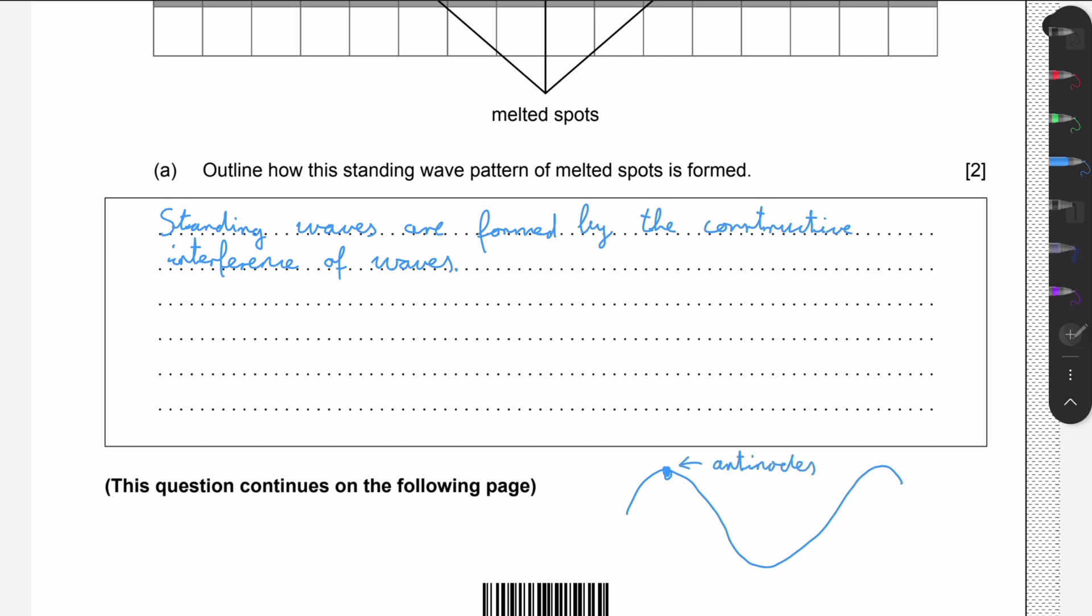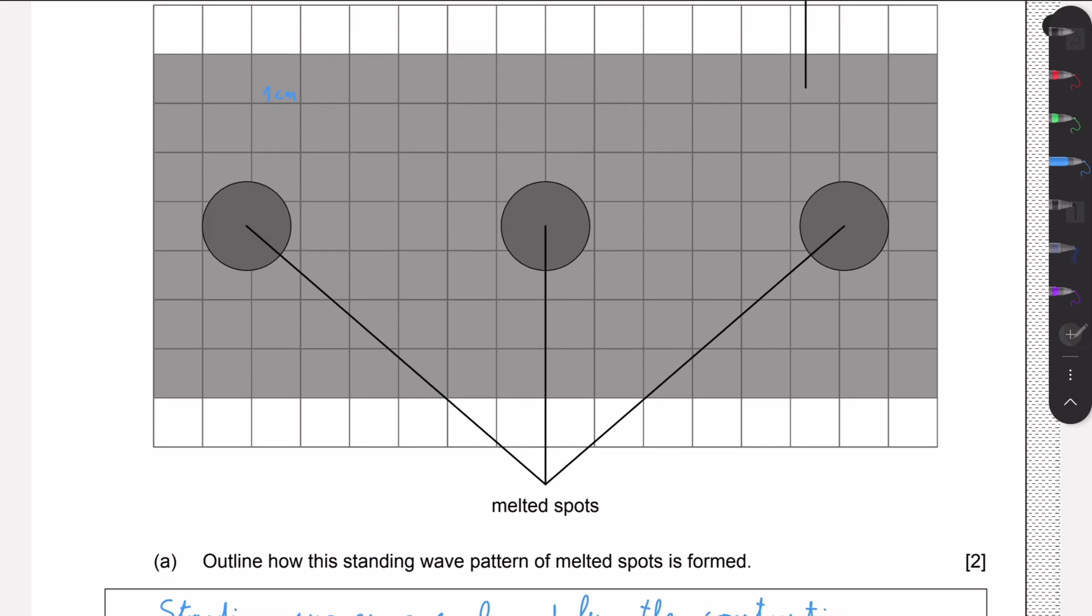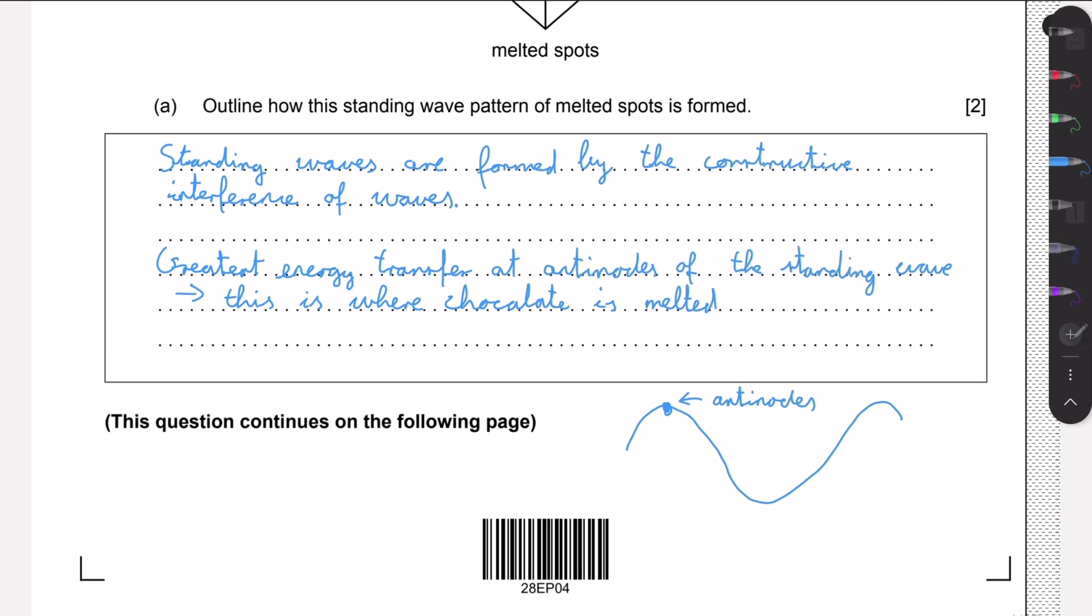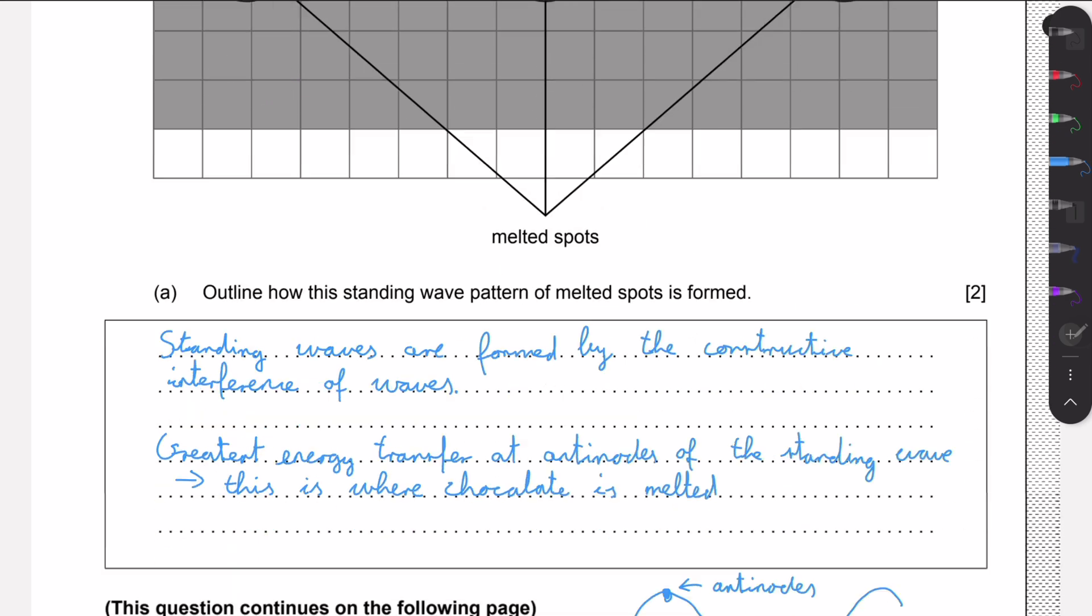These are also called anti-nodes when we are talking about standing waves. So greatest energy transfer at anti-nodes of the standing wave, and this is what melts the chocolate. That's why we will have this pattern here, as obviously we don't have an anti-node everywhere along the wave, only at given intervals, and in between these intervals we have no melting taking place or just very little.